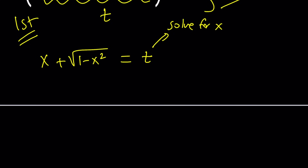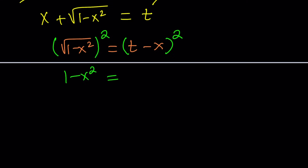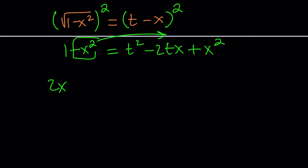We can go ahead and isolate the radical by subtracting x from both sides — the reason is we want to get rid of the radical. Let's square both sides. That eliminates the radical: 1 minus x squared equals t squared minus 2tx plus x squared. Now x did not disappear — that's perfectly fine. Since we're solving for x, let's put all x terms on the right-hand side. That gives us 2x squared plus 2tx plus t squared minus 1 equals 0.